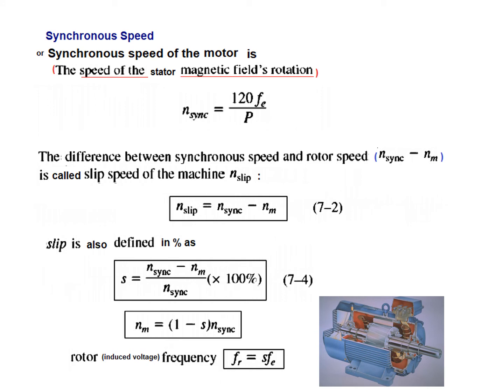Since the rotor lags the stator field, the frequency of the induced voltage in the rotor will be different from the frequency of the power supplied to the stator. That rotor frequency is given by: f_R = S × f_E, where S is the slip and f_E is the frequency of the applied signal.